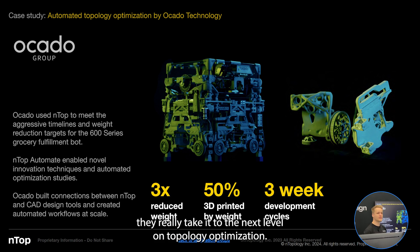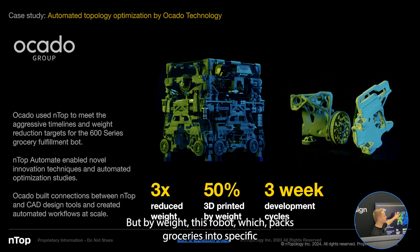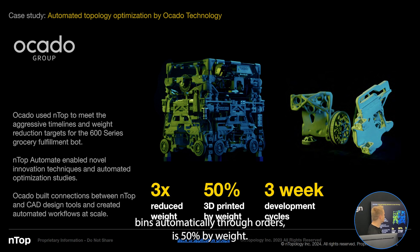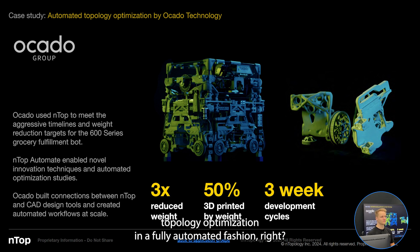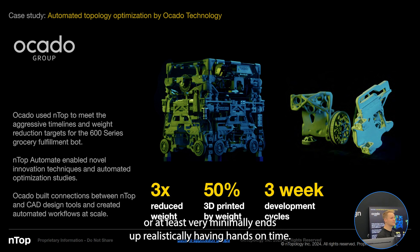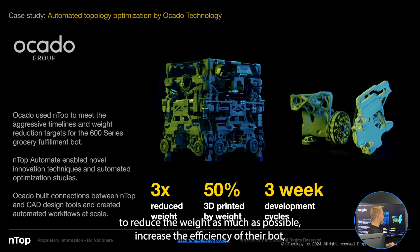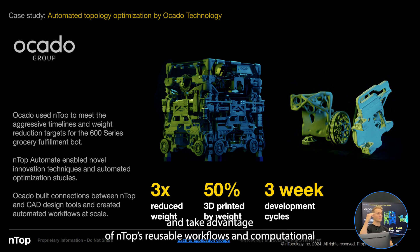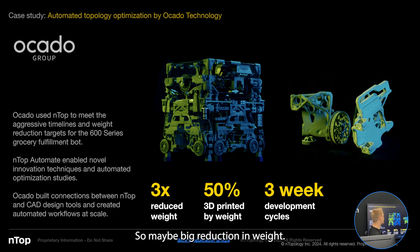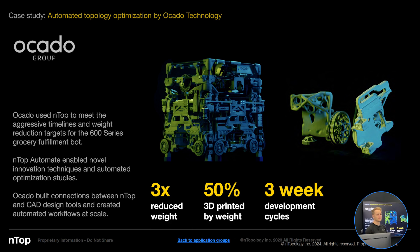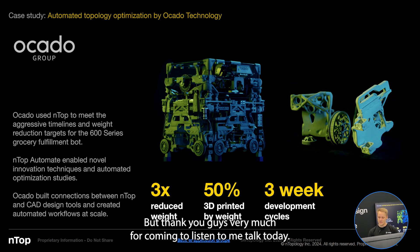Additionally, Okada Group really takes topology optimization to the next level. In fact, their robot — which packs groceries into specific bins automatically based on orders — is 50% by weight composed of 3D-printed components, all of which are run through nTop's topology optimization in a fully automated fashion. Pretty much no design engineer really touches this at the end of the day. They're automating the design through topology optimization to reduce weight as much as possible, increase efficiency, and take advantage of nTop's reusable workflows and computational modeling approach. They've reduced their weight by three times and are able to design the entire robot in three weeks.